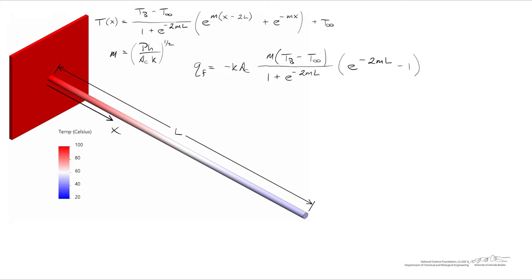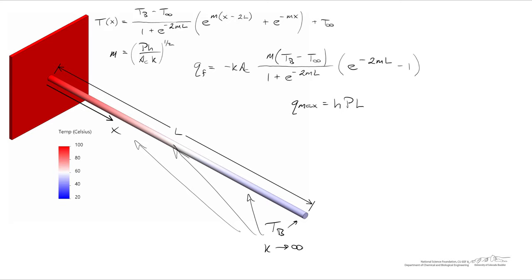Let's quantify the maximum possible heat transfer, which we'll call Qmax. The maximum would occur if the thermal conductivity k went to infinity — in that limit, the entire fin would be at the base temperature everywhere along its length. We'll call that Qmax. So the maximum heat transfer is h times the perimeter times the length of the fin — giving the outer surface area — multiplied by the maximum driving force, which is the base temperature minus the ambient temperature. Qmax scales linearly with L, so doubling the length doubles the theoretical maximum heat transfer.